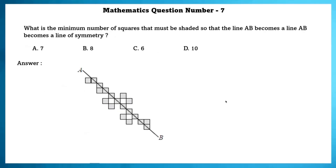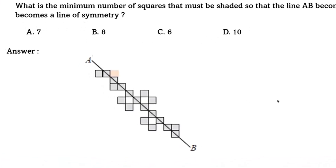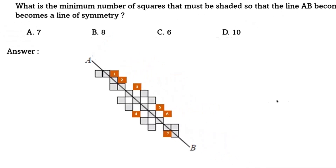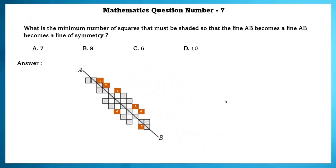Mathematics question number 7. What is the minimum number of squares that must be shaded so that line AB becomes a line of symmetry? As we can see, we have to shade 1, 2, 3, 4, 5, 6, and 7 boxes in order to make AB the line of symmetry.